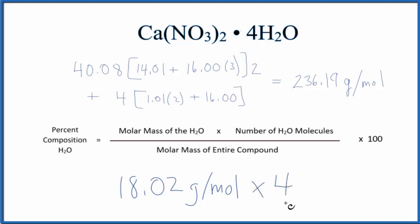I'm going to multiply that by the four water molecules and divide that by the molar mass for the entire compound up here. So I figured that out up here - the molar mass for Ca(NO3)2·4H2O is 236.19 grams per mole.